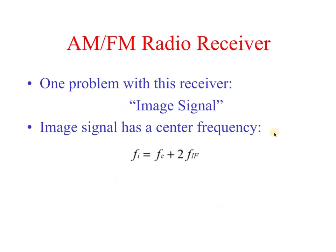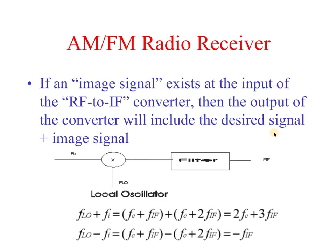One problem with this type of receiver is image signals. An image signal has a center frequency FI equal to Fc + 2·FIF. If an image signal exists at the input of the RF-to-IF converter, the output will include both the desired signal and the image signal. Specifically, FLO + FI = Fc + FIF + Fc + 2·FIF = Fc + 3·FIF, and FLO − FI = Fc + FIF − (Fc + 2·FIF) = −FIF.